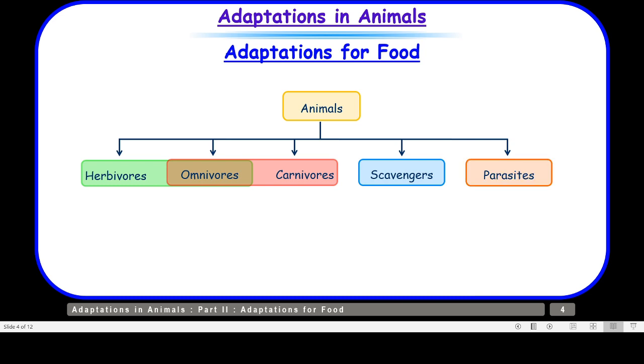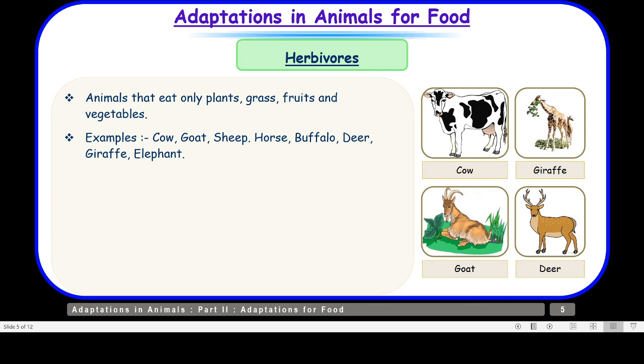Let us take up the first category — herbivores. Animals that eat only plants, grass, fruits and vegetables are called herbivores. Examples include cow, goat, sheep, horse, buffalo, deer, giraffe, and elephant — all these animals fall in this category.